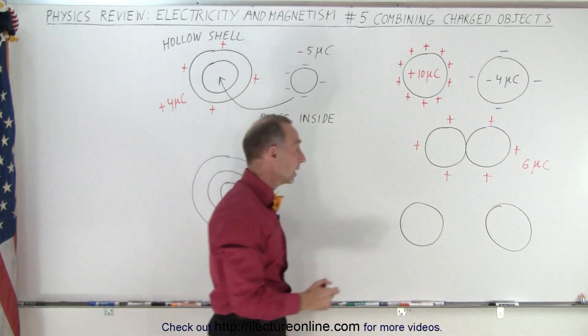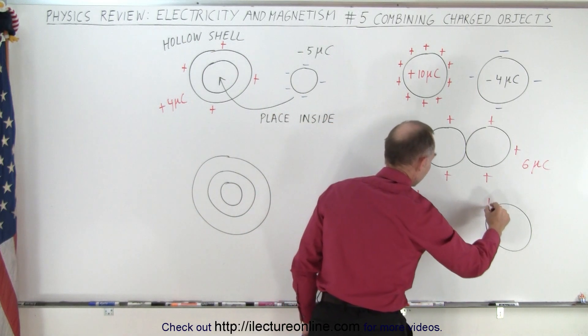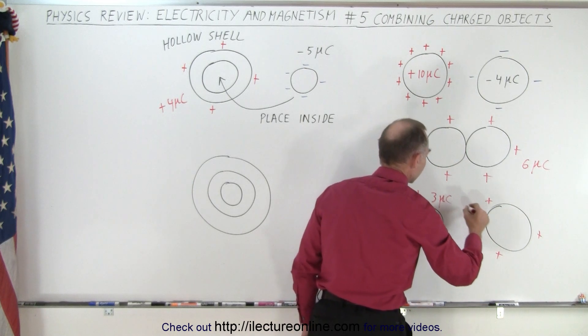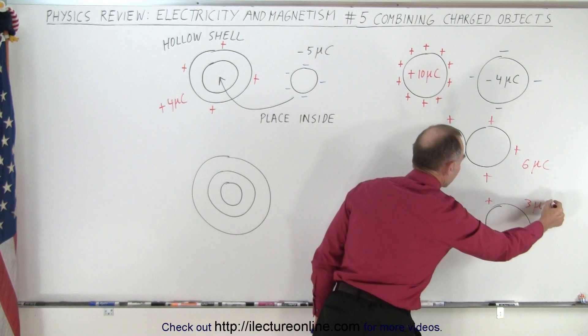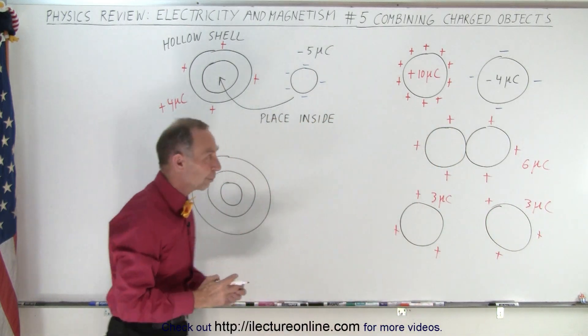And then when you pull them apart, they will each then have half of that six, or three positive charges on each. So we have three micro coulombs of charge here and three micro coulombs of charge here. So each symbol here represents a micro coulomb worth of charge.